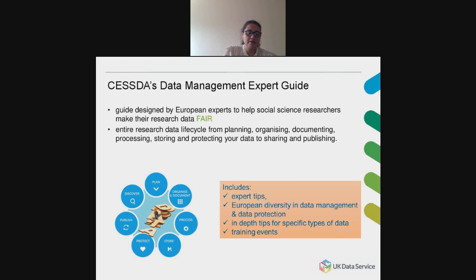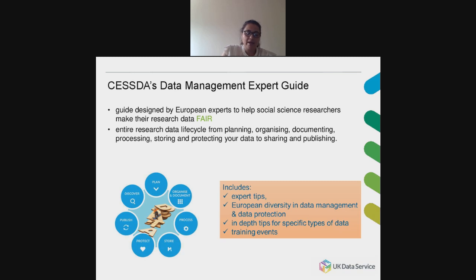Moving forward to the CESSDA Data Management Expert Guide. It was designed by European experts to help social science researchers make their research data FAIR, divided into seven chapters corresponding to different stages of the data life cycle. It is written for social science researchers preferably in the early stages of practicing research data management. The seven chapters cover planning, organizing, documenting, processing, storing, protecting, archiving, and publishing — and finally, how to discover this data and find it online.